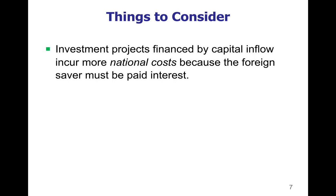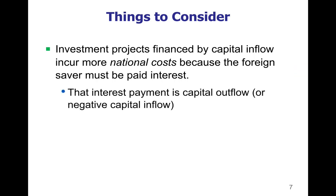Some things to consider: investment projects, which are business spending projects, are financed by capital inflow. What that means is there are more national costs, because the foreign saver is going to get paid interest. So if a foreigner puts their money in the American system and it funds a business project here in the United States, that foreigner gets paid interest on their savings. The interest payment going to the foreigner is considered outflow, while the money put into the investment in the United States is capital inflow. If all money in American banks only paid interest to Americans or only funded American business expansion, all costs and benefits would stay within the United States.